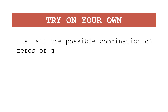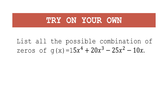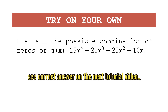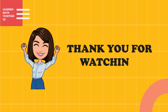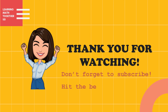Now try this on your own: list all the possible combinations of zeros of g(x) = 15x⁴ + 20x³ − 25x² − 10x. The answer will be shown in the next video. That's all for today — thank you for watching. If you haven't subscribed yet, don't forget to subscribe and hit the bell button to get updates on my next videos. See you next time.